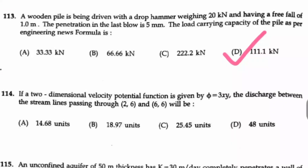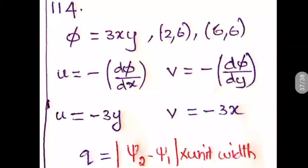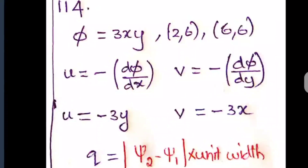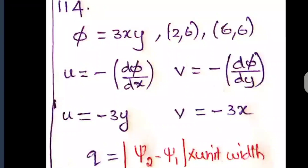Question number 114: A two-dimensional velocity potential function is given by φ = 3xy. The discharge between streamlines passing through (2,6) and (6,6) is to be found. From φ, the velocity components are: u = −∂φ/∂x = −3y and v = −∂φ/∂y = −3x. The discharge q = |ψ₂ − ψ₁| per unit width, so we need to find the stream functions.